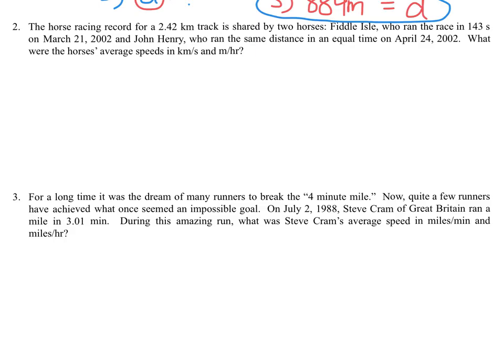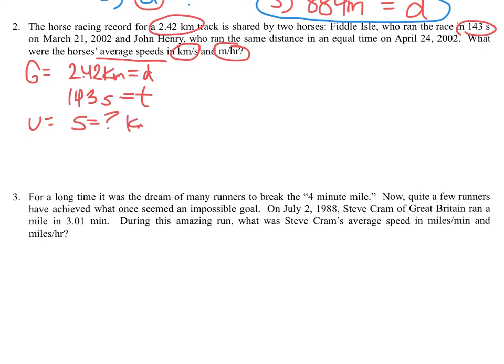Looking at the next question, number two, it says a horse racing record for 2.42 kilometer track is shared by two horses. So if I'm going to do the GUESS method here, the given is 2.42 kilometers—that looks like a distance. This distance is shared by two horses: Fiddle Isle who ran the race in 143 seconds. So 143 seconds is a time. John Henry ran the same distance in an equal time. What were the horses' average speeds? So we are looking for the average speed, specifically in kilometers per second and meters per hour.